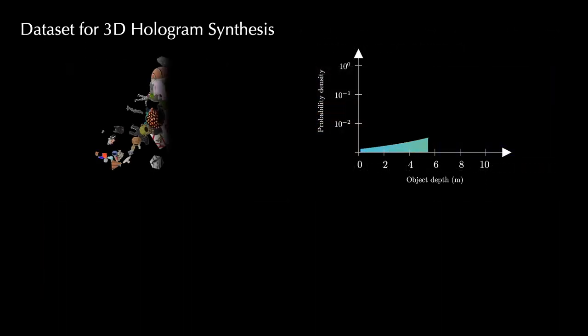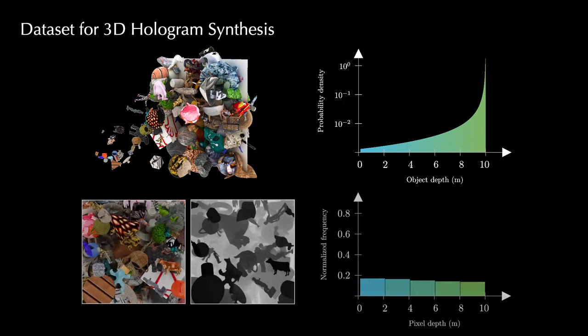so we created a custom random scene generator. In particular, we derived a closed-form distribution for arranging meshes such that the pixel depth is statistically uniform. Altogether, we rendered 4000 RGBD and hologram pairs to introduce the first large-scale 3D hologram dataset, the MITCGH4K.